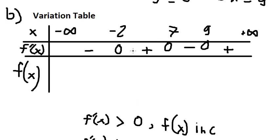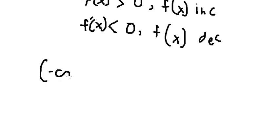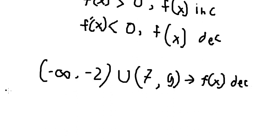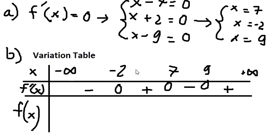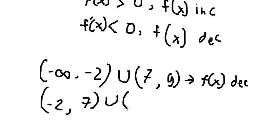So we can see that from negative infinity to negative two and from seven to nine, the derivative is negative, so the function is decreasing. From negative two to seven and from nine to positive infinity, the derivative is positive, so the function is increasing.